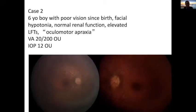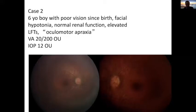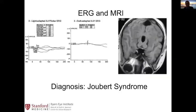The second case is a six-year-old boy with poor vision since birth. He has hypotonia of the face, elevated liver function tests, and ocular motor apraxia. His vision tests out to 20/200 and his fundus exam is shown. He has no visible optic disc drusen. Both patients have essentially flat ERGs and both have an unusual molar tooth sign on MRI midbrain.